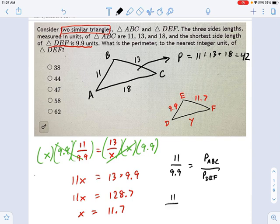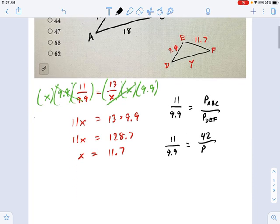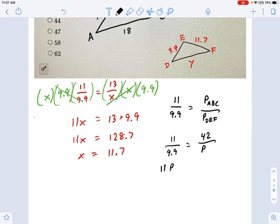Rewriting that equation, we get 11 over 9.9 equals 42 over the perimeter that I'm looking for. And now, with some more multiplication, you can solve this problem. I'm going to rewrite this and say 11 times the perimeter I want equals 42 times 9.9, which is 415.8, and the perimeter is that thing divided by 11.